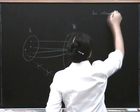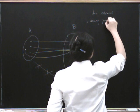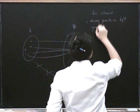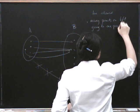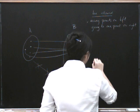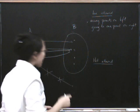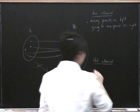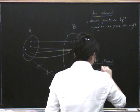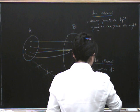So let's write down some features. We are allowed: many points on the left going to one point on the right. Whereas we're not allowed: one point on the left going to many points on the right.